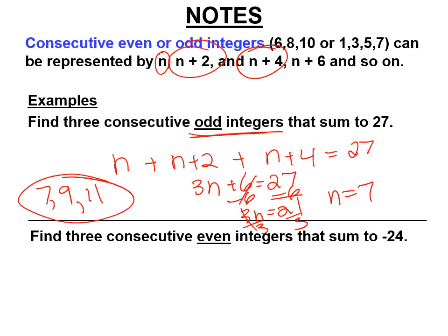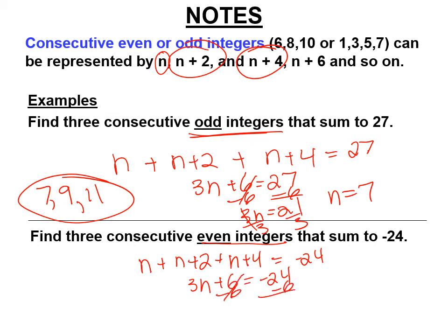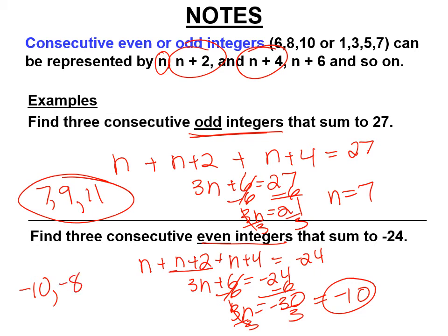Try it with even integers — you do it exactly the same way. n, n plus 2, n plus 4, and they add up to negative 24. n plus n plus n is 3n, plus 2 plus 4 is 6, equals negative 24. Subtract 6 from both sides: 3n equals negative 30. Divide by 3, and n equals negative 10. Negative 10 is an even integer. The next two are negative 10 plus 2 equals negative 8, and negative 10 plus 4 equals negative 6. Those are the three consecutive even integers that sum up to negative 24.